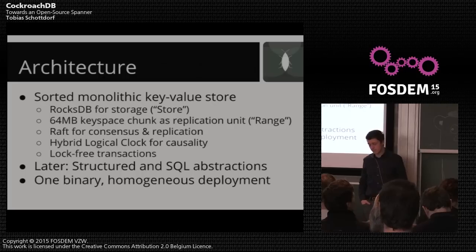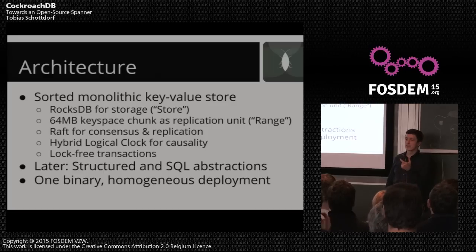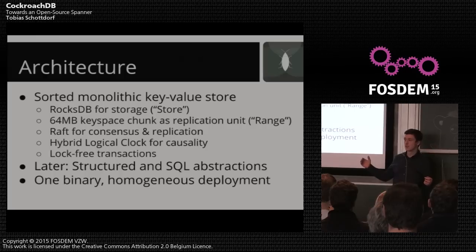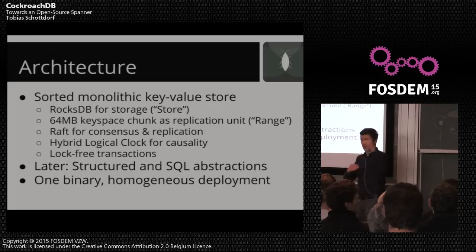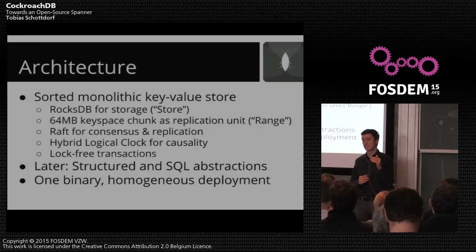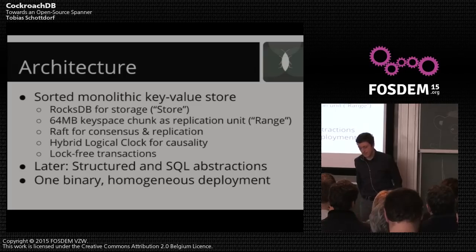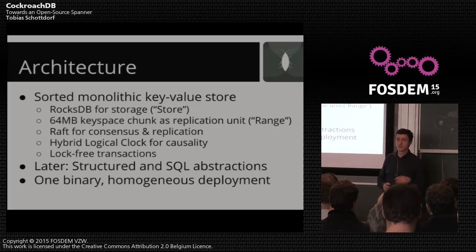We put a lot of work into writing a Raft implementation. We found that none of those that existed met our needs, and CoreOS at the same time had an issue with go-raft, so it was natural for us to team up. We contributed code ensuring the implementation works when you have a hundred servers with millions and millions of consensus groups — because with CockroachDB you have 64-megabyte pieces of data each forming a consensus group, so millions of those on a node with a large hard drive. This needs very careful optimization so that millions of consensus groups don't each create millions-squared connections.